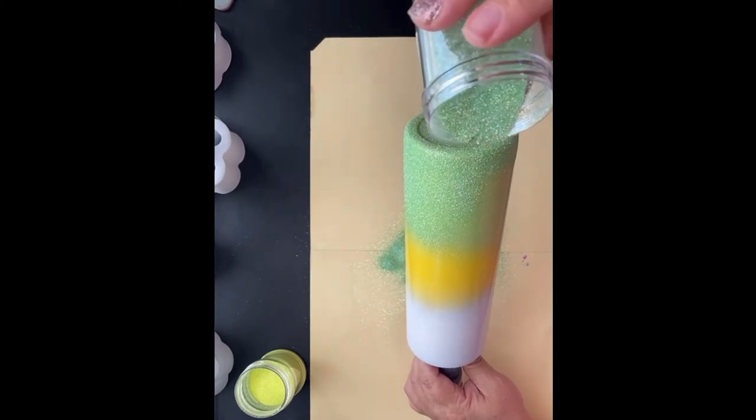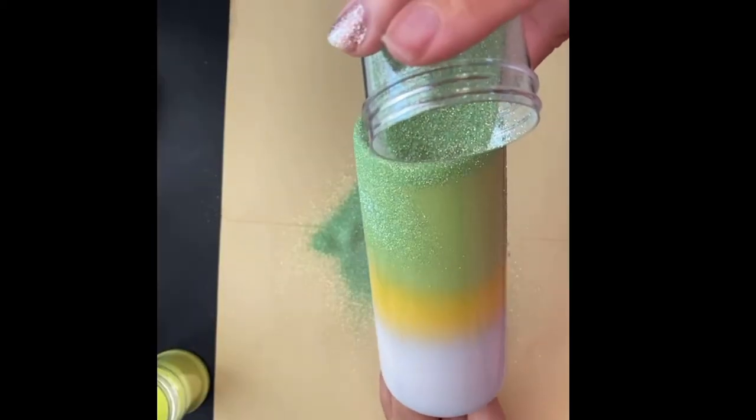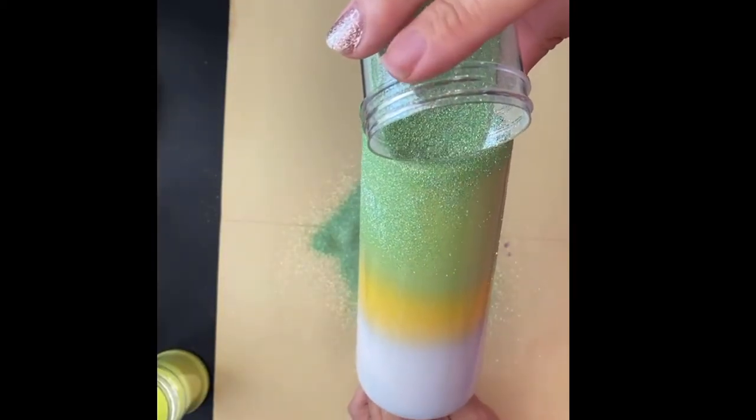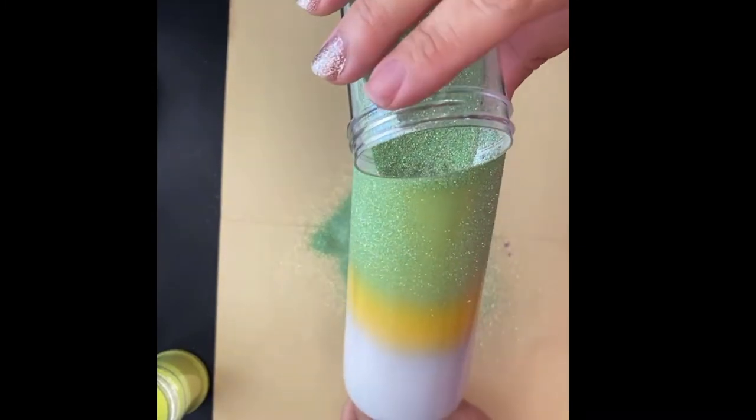So you notice I am just lightly tapping that glitter out of the container and I'm focusing on the same spot on the bottom rim of the cup all the way around allowing the glitter to fall.